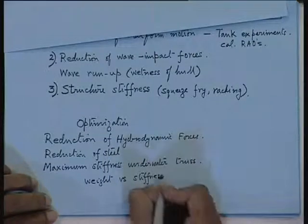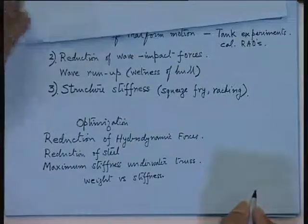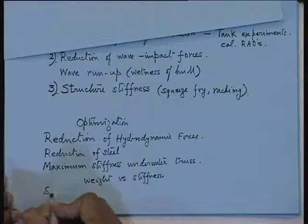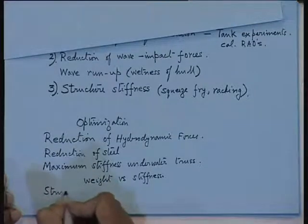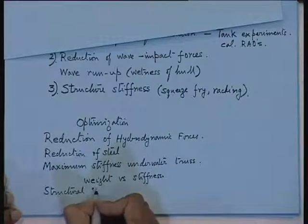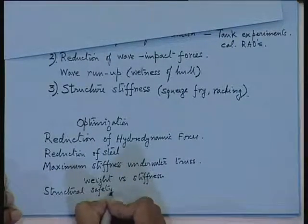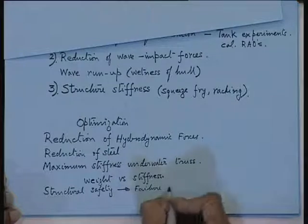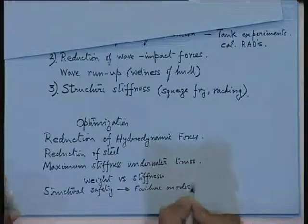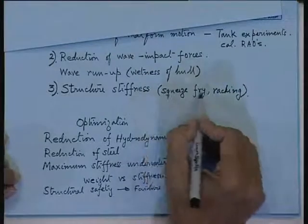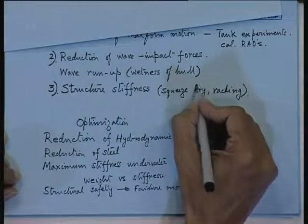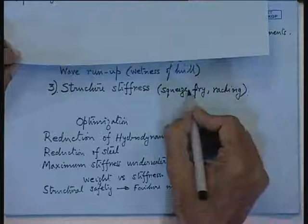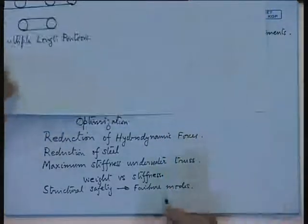All kinds of compromises have to be made. That is why we have the design spiral and a lot of optimization studies — especially weight versus stiffness. The other major aspect is structural safety: you have to study the various failure modes, which is very crucial. One of the failure modes is squeeze-pry: pry means forcing it open, and this is called squeeze-pry.